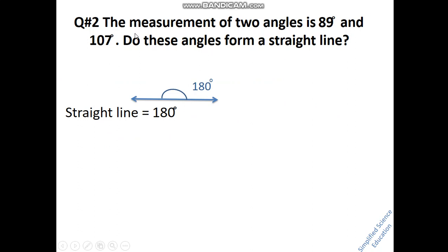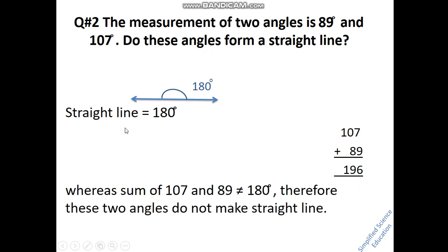Question number 2: Two angles are 89 degrees and 107 degrees. We need to check if these two angles form a straight line. Adding them together: 89 plus 107 equals 196 degrees. Since a straight line is 180 degrees, and 196 degrees is not equal to 180 degrees, these two angles do not form a straight line.